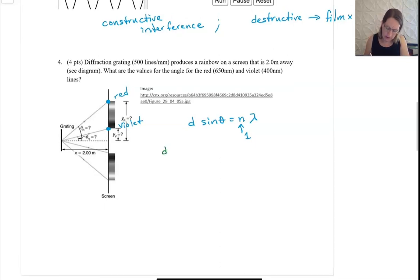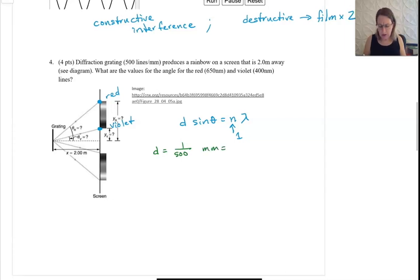When we put that in, we've got our D is 1 over 500, and that would be in millimeters. So then that gives us 0.002 millimeters. And then we want to be in meters, which is 2 times 10 to the minus 3 millimeters. And when we convert it, that becomes 2 times 10 to the minus 6 meters.